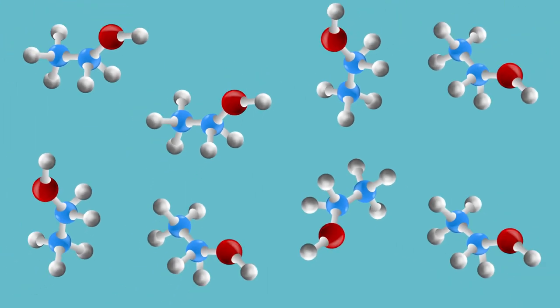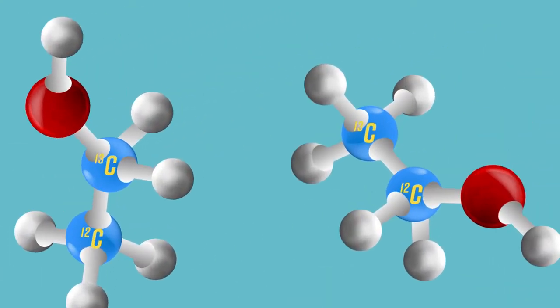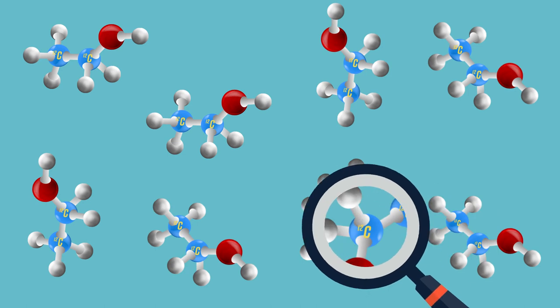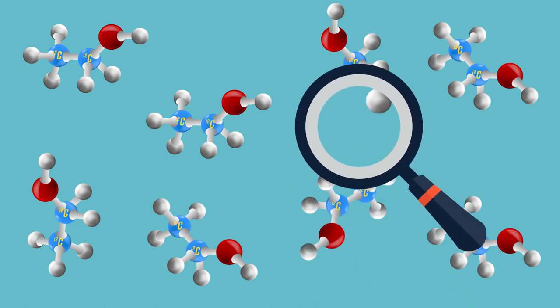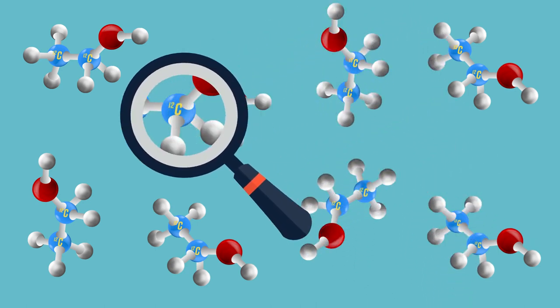Dr. Gilbert focuses on small molecules such as ethanol, which contains two carbon atoms. In a sample of ethanol, most molecules will contain two carbon-12 atoms, while a few will have one carbon-13 and one carbon-12. Even fewer molecules will contain two carbon-13 atoms. Dr. Gilbert's team measures the ratio of these two isotopes at specific positions within molecules to reveal their origin.